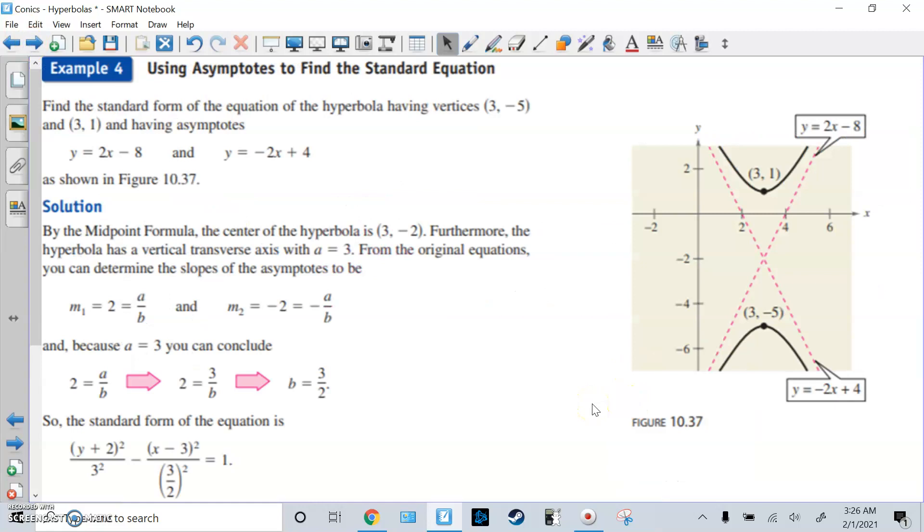Example 4: using asymptotes to find the standard equation. They gave us the vertices 3, negative 5 and 3, 1. We could find the center, and also they gave us the two asymptotes, so we drew that. Using the midpoint of the vertices, the center is 3, negative 2.